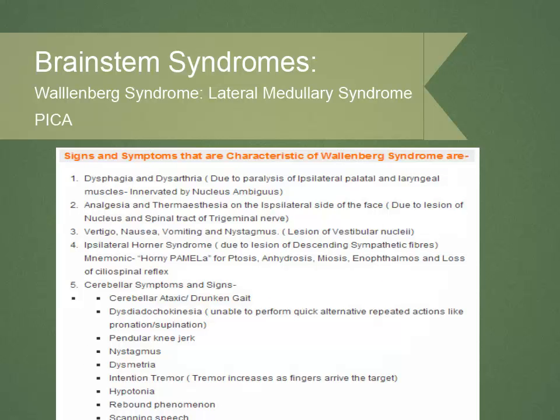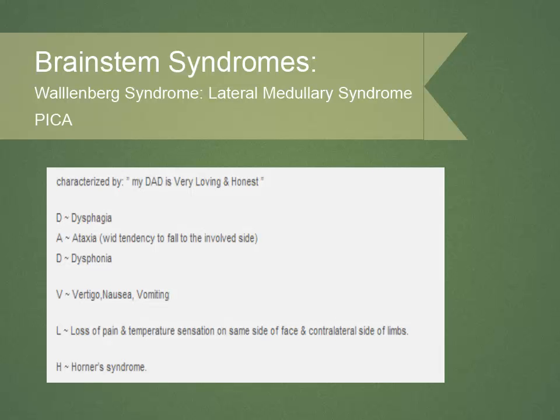The clinical signs and symptoms associated with Wallenberg syndrome include dysarthria and dysphagia, decreased pain and temperature sensation on the ipsilateral face, severe vertigo, nausea and vomiting, an ipsilateral Horner syndrome, and ipsilateral cerebellar involvement. There is no involvement of the corticospinal tract and no involvement of posterior column sensory functions. For those interested in learning all of these symptoms, there is a good mnemonic: 'Remember my dad is very loving and honest.'